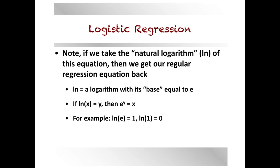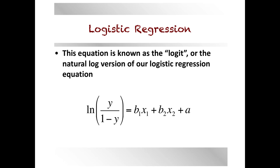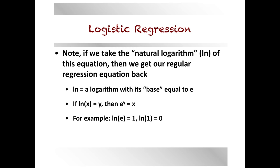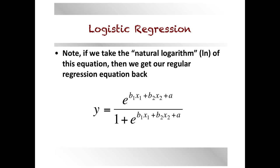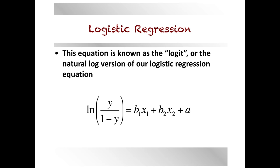This yields what's known as the logit version of the logistic regression equation: the natural log of y over (1 minus y) equals your regression equation. This is algebraically equivalent to the form with e to the exponent and the fraction. These are two equivalent versions of the same logistic regression equation.